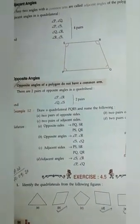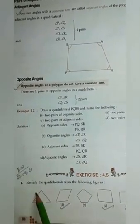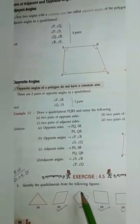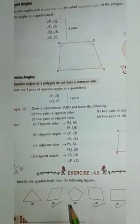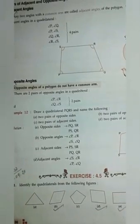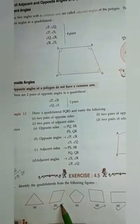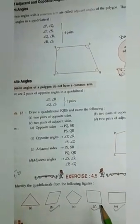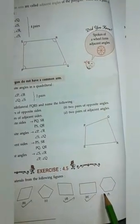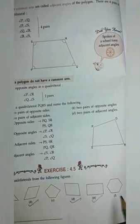Now exercise 4.5, question 1: Identify the quadrilaterals from the following figures. A quadrilateral has four sides. So the figure with three sides is a triangle. The figures with four sides are quadrilaterals. The remaining figures have more than four sides.